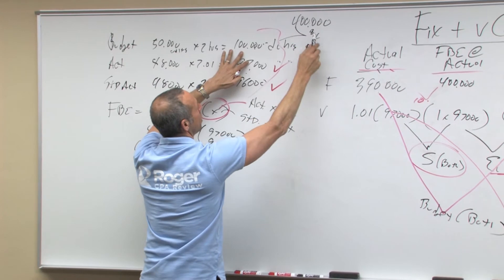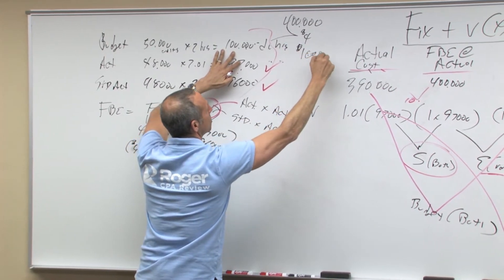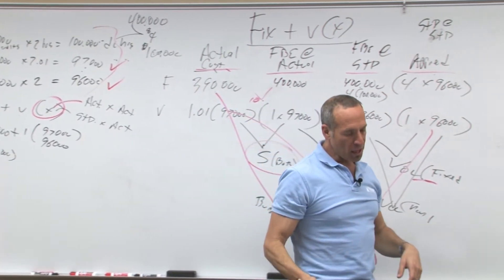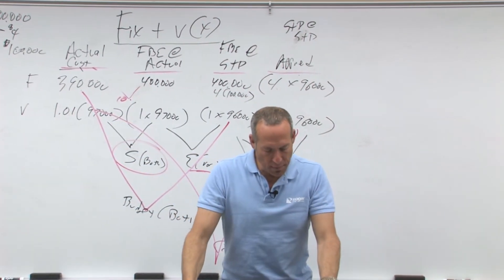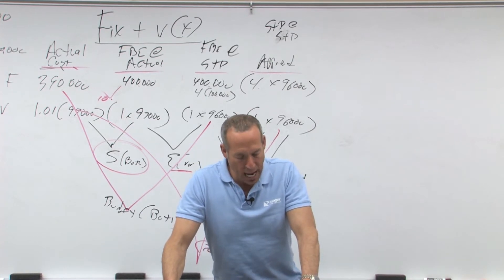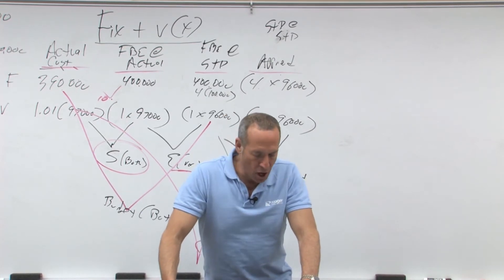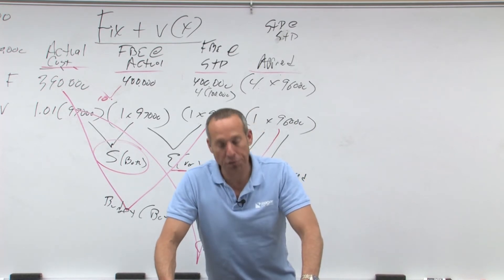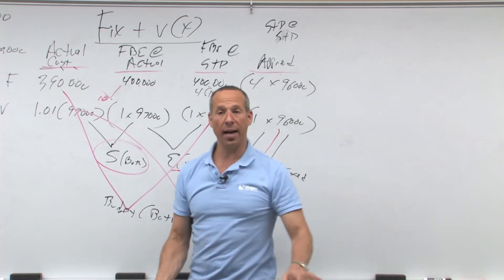That was our base. That's what we set up here, $400,000 plus $100,000, which is a dollar at 100,000 hours. Then it says three, finally total estimated overhead is divided by the number of units in the base to establish a rate. $500,000 divided by 100,000 is $5 per hour, which is $4 for fixed and $1 for variable.